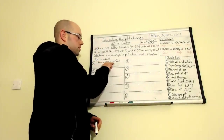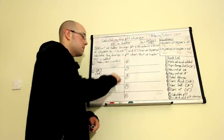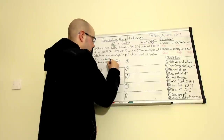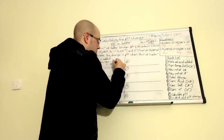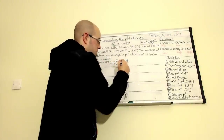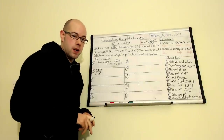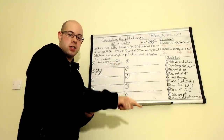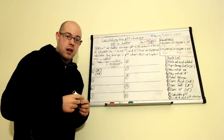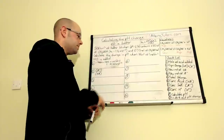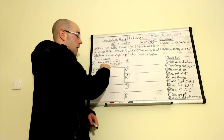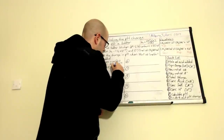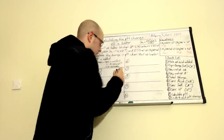Moles of added acid is calculated by multiplying concentration by volume, with volume in dm³. Our concentration is 1 and our volume is 10 cm³, so we divide by 1000 — or multiply by 10⁻³. If you need help converting units, click the link below. Multiplying those two values together gives 0.01 moles of strong acid.